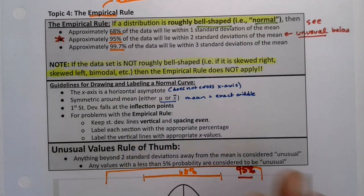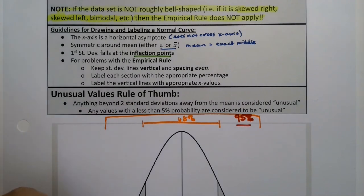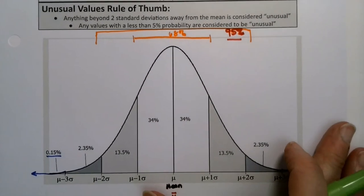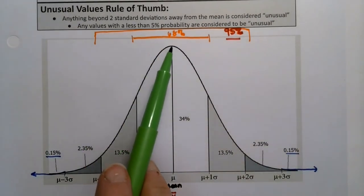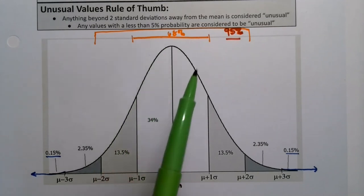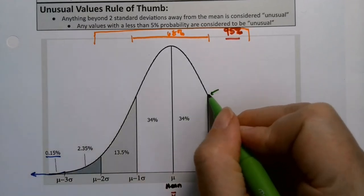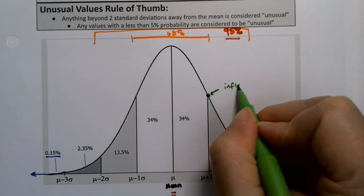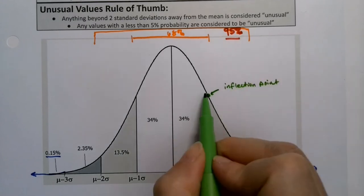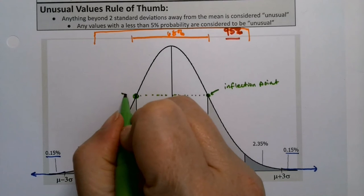Now very important, where do the inflection points fall and what the heck are they? Well inflection points, they mean a lot for us in calculus. If you can think of this as a roller coaster, matter of fact think of it as a roller coaster. And you click click click click get up to the top of the roller coaster, and then you start going down. This point right here is where your butt lifts off the seat. You ever have that sensation in a car or on a roller coaster? That's the inflection point right here. And you'll notice there's two of them, one on that side and one at the exact same height over on the other side.